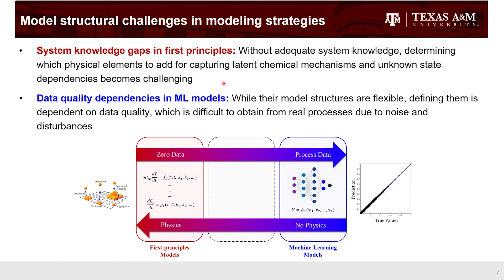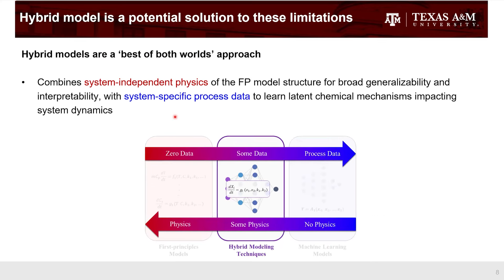Summarizing the pros and cons: first-principle models always have system knowledge gaps, while machine learning approaches have data quality dependencies. My favorite spectrum to summarize this is that first-principle models have 100% dependence on physics with almost zero dependence on data, while machine learning models are the opposite. We can think about a common ground standing between these two. Motivated by that, today I'm going to talk about a hybrid model — a best-of-both-worlds approach — combining system-independent physics for broad generalizability and interpretability with system-specific process data to learn latent chemical mechanisms.